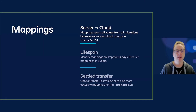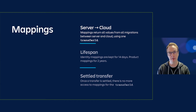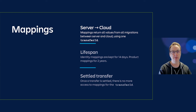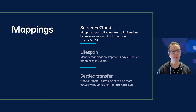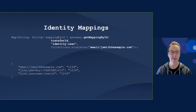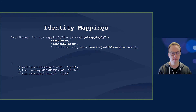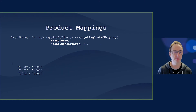Mappings return all values from all migrations between server and cloud using one transfer ID. So if a customer has done many test migrations, the transfer ID will give you access to all mappings from all previous migrations between that server instance and that cloud instance. Here's an example of identity mappings for a user — you can see the Jira side user and then the cloud ID of what that user will be. We also have paginated mappings, for example Confluence pages, with the server side IDs and the cloud side IDs.